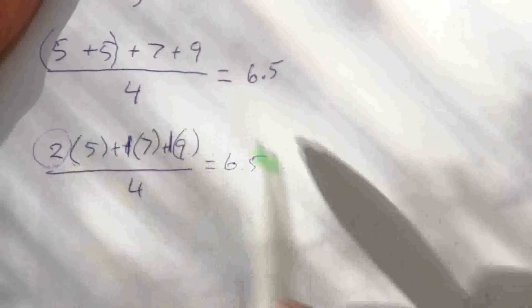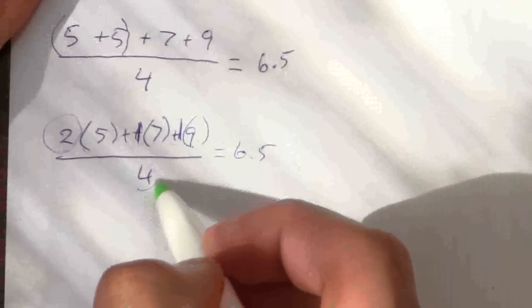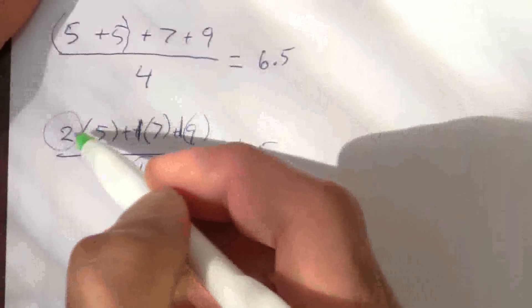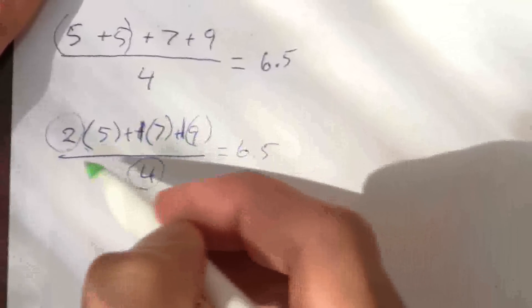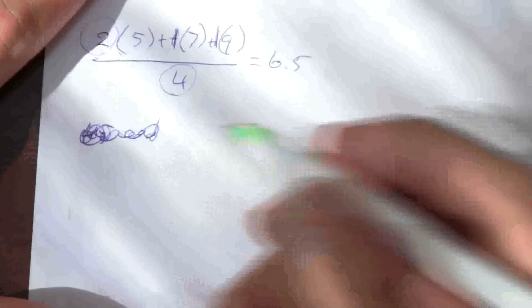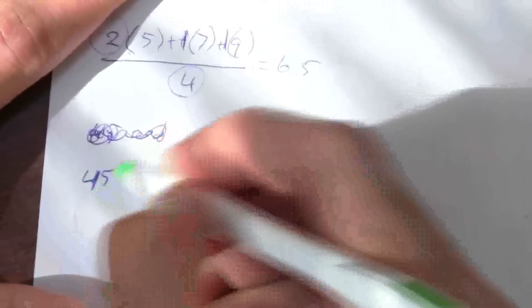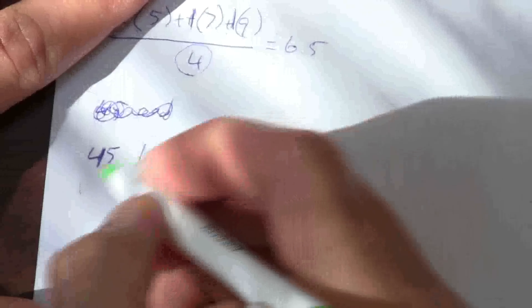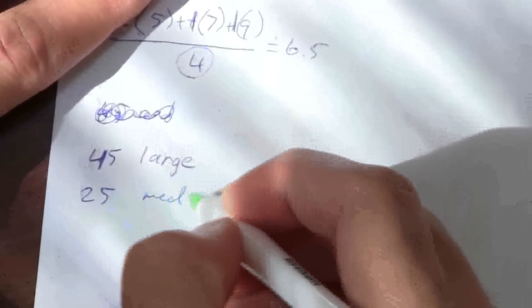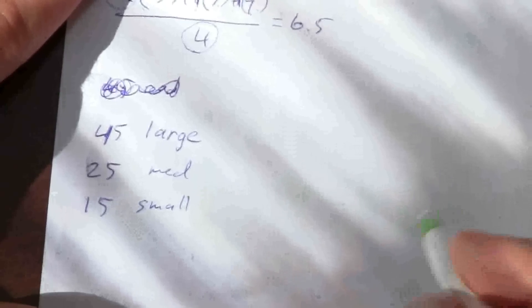What I divide by is the sum of the weights. 2 and 1 and 1 is 4. So let's say I have 45 large marbles, 25 medium marbles, and 15 small marbles.